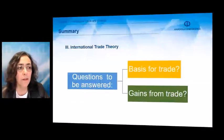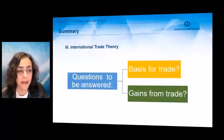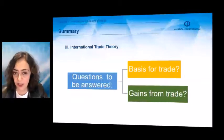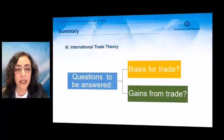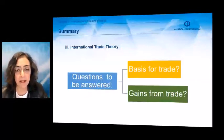When it comes to the international trade theory, we have two main questions which should be answered. International trade theory seeks to answer two basic questions. The first one: what is the basis for trade, and what are the gains from trade? In other words, why do countries trade with each other, and when they are trading, what would be their gains? These two basic questions are the main content of the international trade theory.